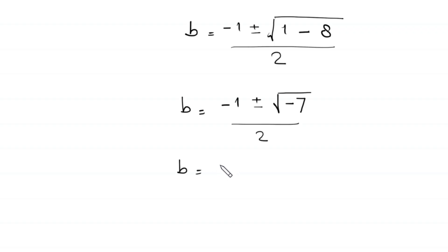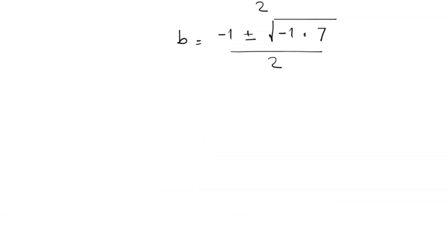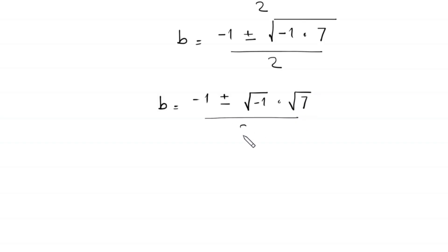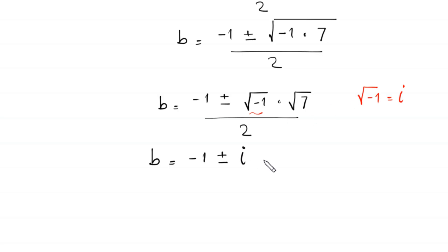Next, negative 7 can be written as negative 1 times 7. So the square root of negative 7 becomes square root of negative 1 times square root of 7. Since square root of negative 1 equals i, this becomes i times root 7, divided by 2.